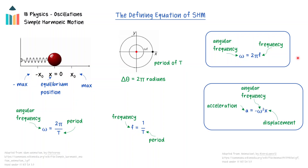The acceleration of a mass undergoing simple harmonic motion is described by the equation: acceleration is equal to minus omega squared, the angular frequency squared, times the displacement x.